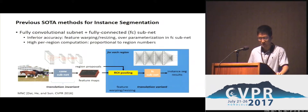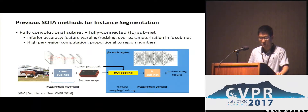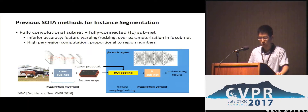In a prevalent family of networks for instance segmentation, the translation variance property is preserved by employing two sub-networks separated by RoI pooling. We argue that there are several issues with such methods. First, the detailed spatial information is damaged and even lost in feature warping and the fully connected layers, which hampers the network from delivering high-quality segment masks. Second, after feature warping, the obtained feature representation is region-specific and the downstream network computation cannot be shared.